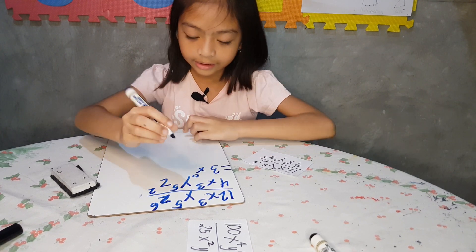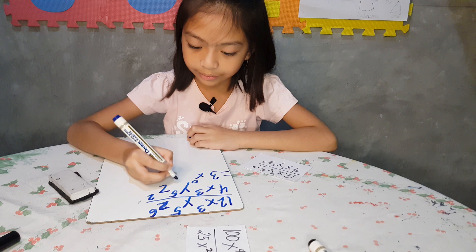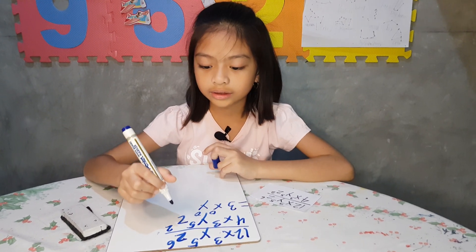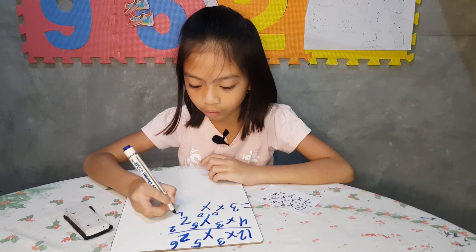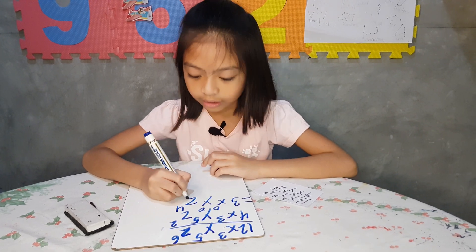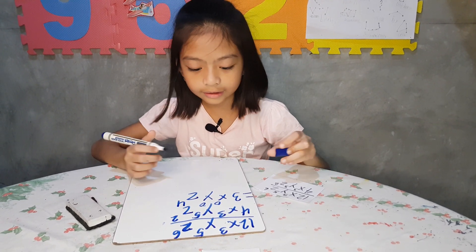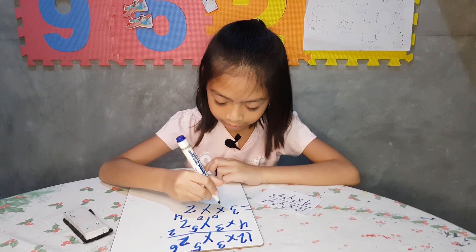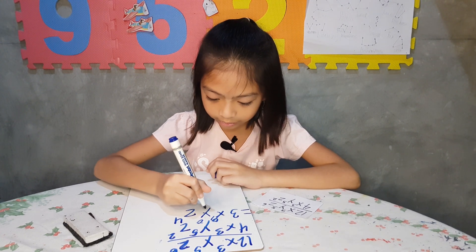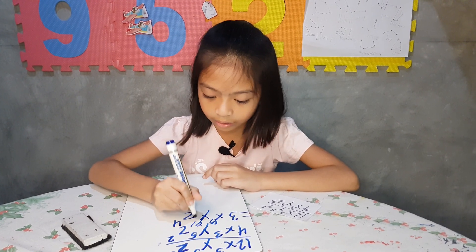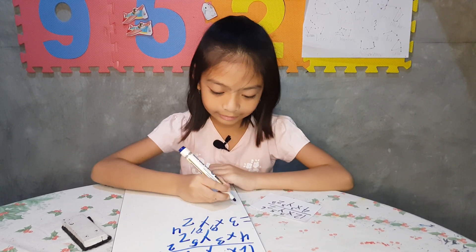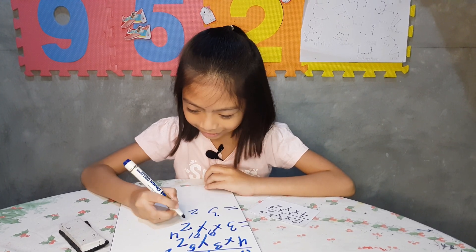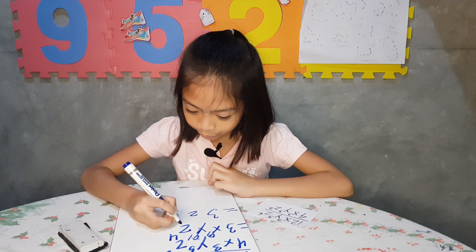And 5 minus 5 equals 0. Don't forget to put y. And then 6 minus 2 equals 4. The x and 0 will turn to 1, and the y and 0 will turn to 1. And then the answer is 3z to the 4th power.